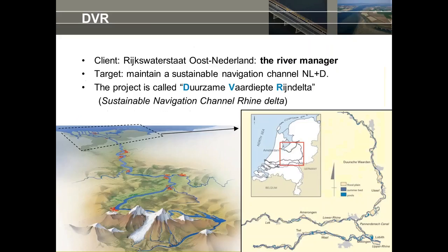The DVR, as we call it here in the Netherlands, symbolizes a sustainable navigation channel for the Rhine branches. The target is to maintain navigability, and it is built in discussion with the river managers in the Netherlands. Part of my presentation will explain the discussions around those choices.